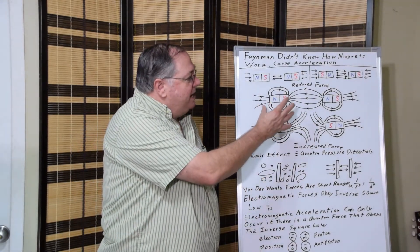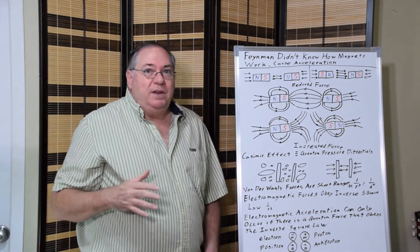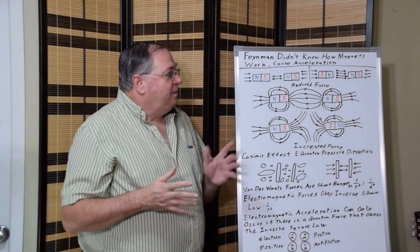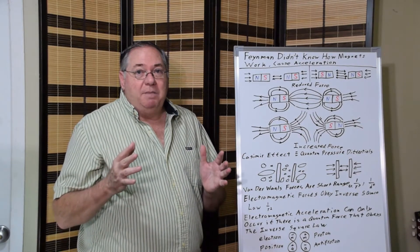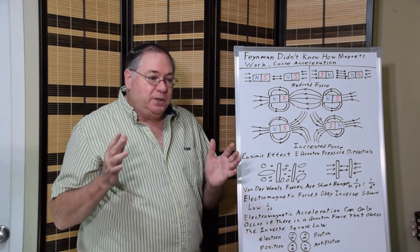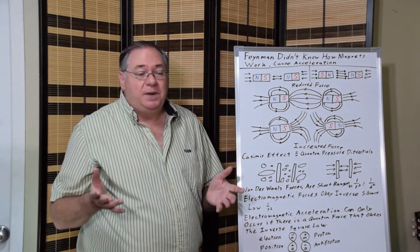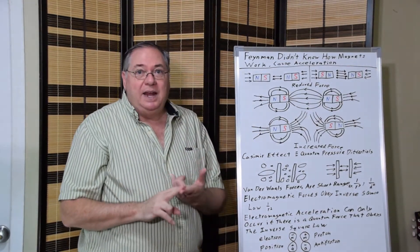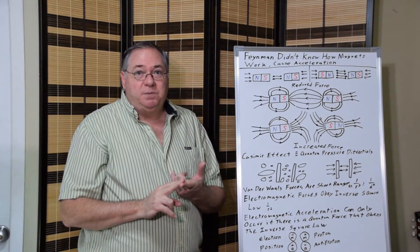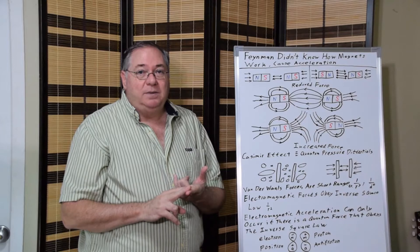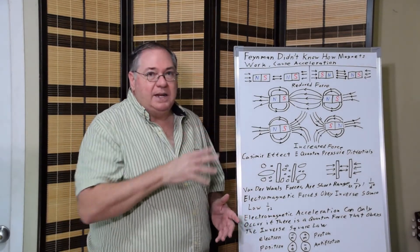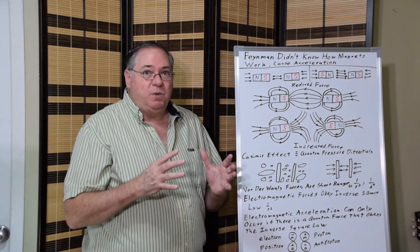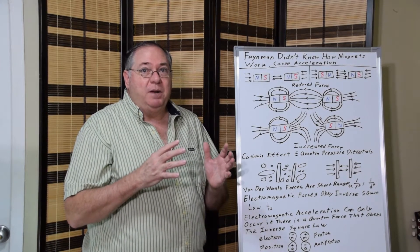So, somehow, we have to get a force from the quantum field that's pushing everything together that obeys the inverse square law. And it also has to be proportional to the amount of matter, the amount of mass that's present, because we show that it is. So, understanding magnets tells us the quantum field has a force which causes pressure which obeys the inverse square law.